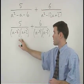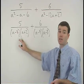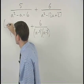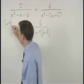Since our first denominator is missing the (a minus 9), we multiply top and bottom of the first fraction by (a minus 9).